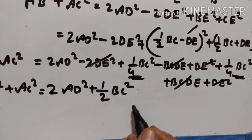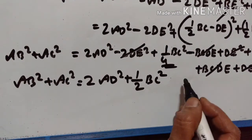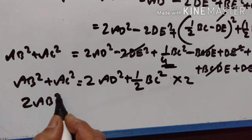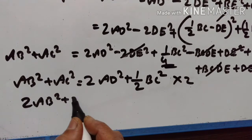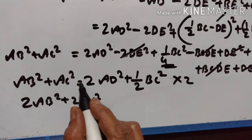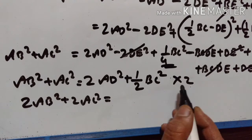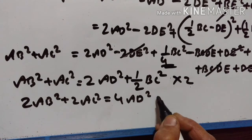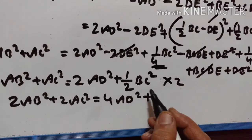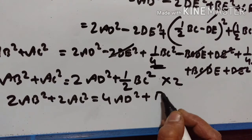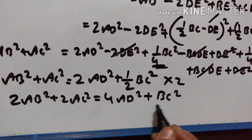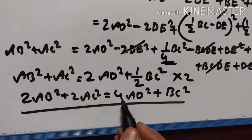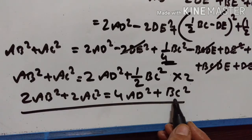So we got AB squared plus AC squared is equal to 2AD squared plus half BC squared. Multiplying both sides by 2, we get 2AB squared plus 2AC squared is equal to 4AD squared plus BC squared. Proved.